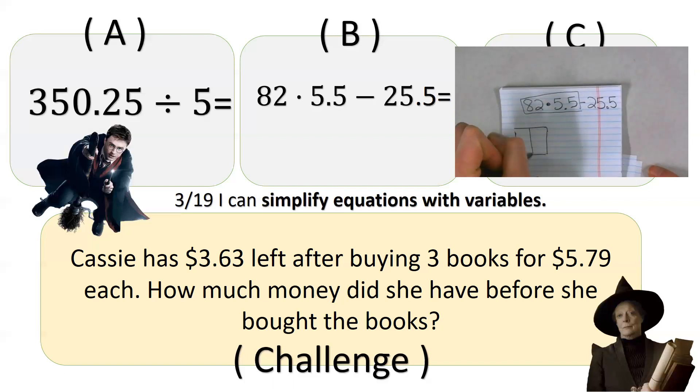So, remember my aunt, please excuse my dear Aunt Sally. First thing you do is parentheses. There are none. Exponents, there are none. Multiply or divide. We do have a multiplication or division right here. So we have 82 times 5.5. Use whatever method you feel comfortable with. I feel comfortable with the lattice method.